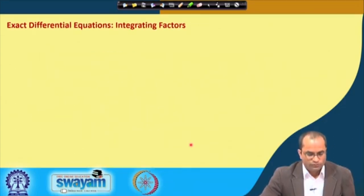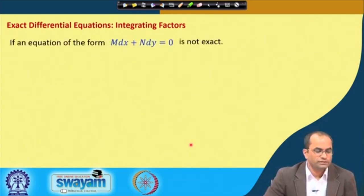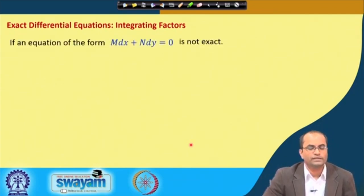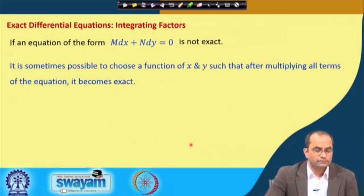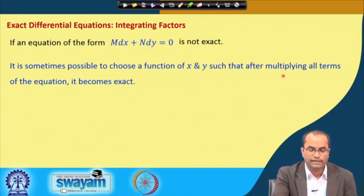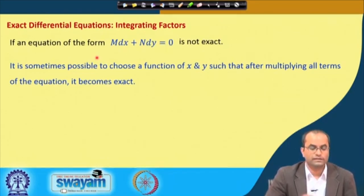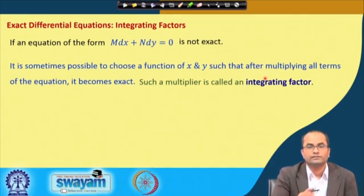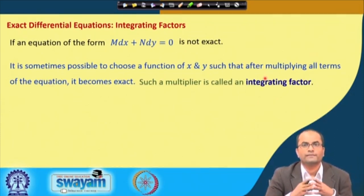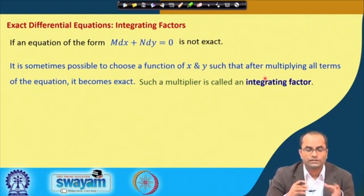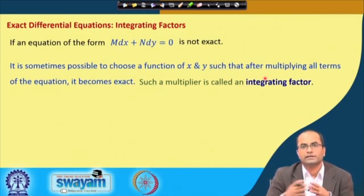Now, what is to be done when the given equation is not exact? For instance, if an equation of the form M dx plus N dy is not exact, it is sometimes possible to choose a function of x and y such that after multiplying all the terms of the equation by that function, the equation becomes exact. Such a multiplier is called the integrating factor.